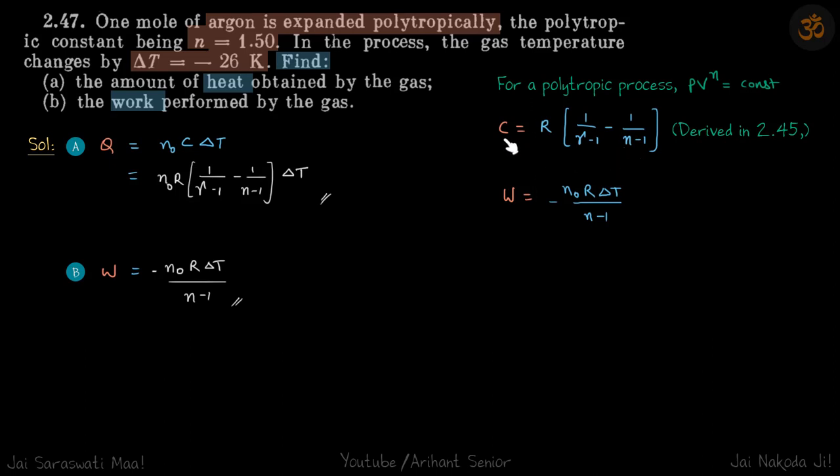And work done for polytropic process is this. And also if you recall, work done for an adiabatic process PV raised power gamma is simply minus n naught R delta T by gamma minus one.